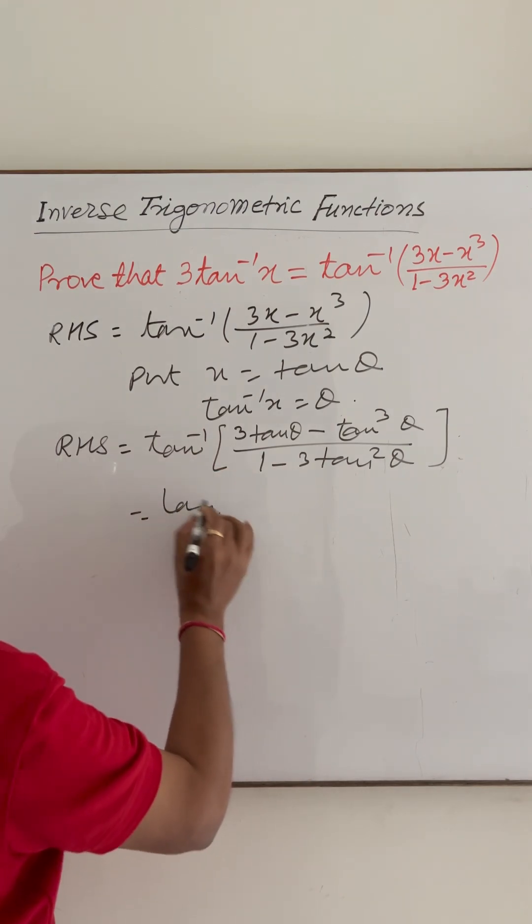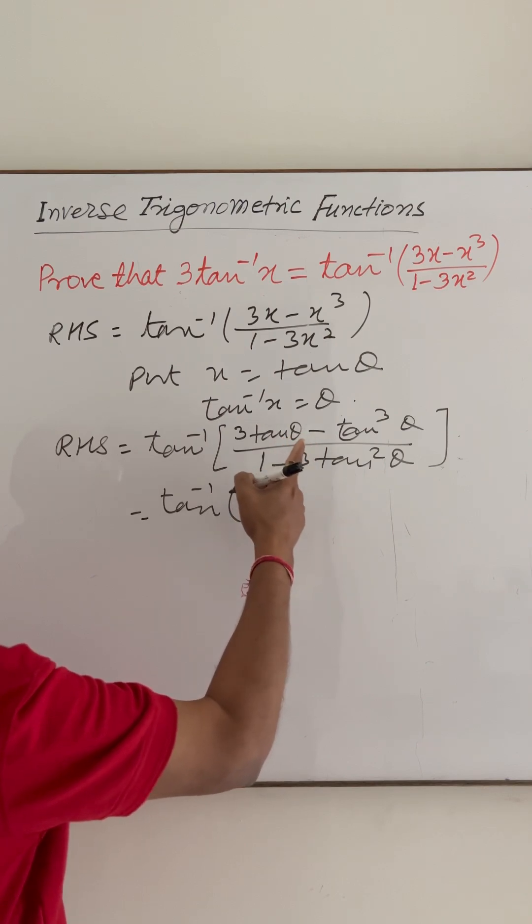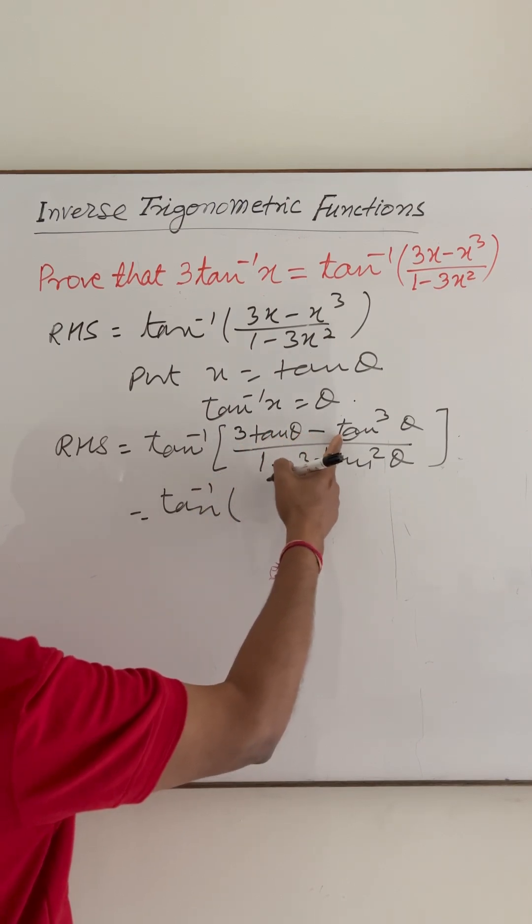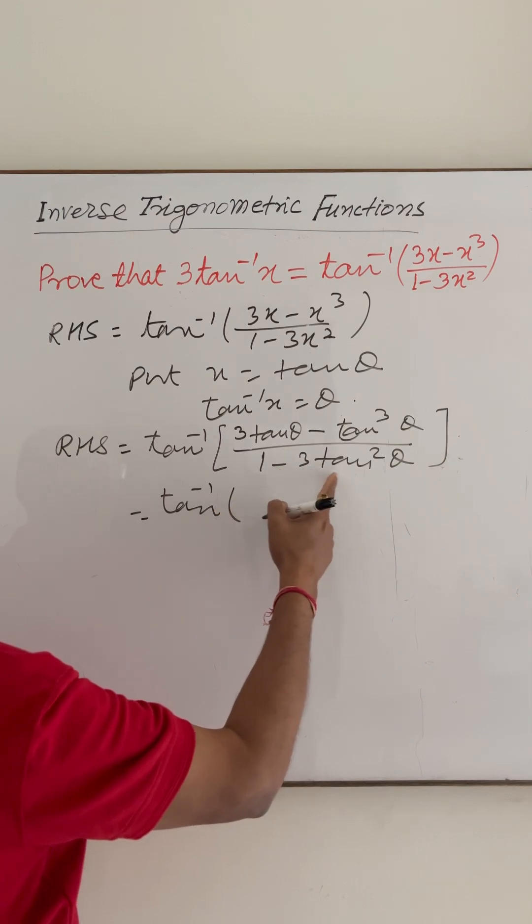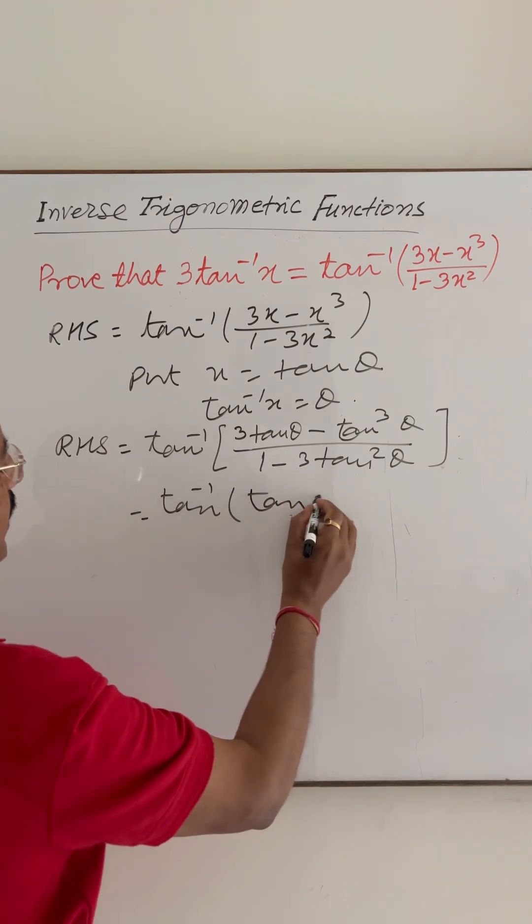This is equal to tan inverse of, this is the formula for tan 3 theta. 3 tan theta minus tan cube theta upon 1 minus 3 tan square theta is tan of 3 theta.